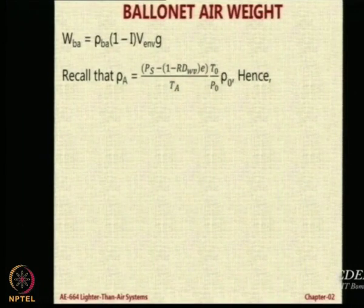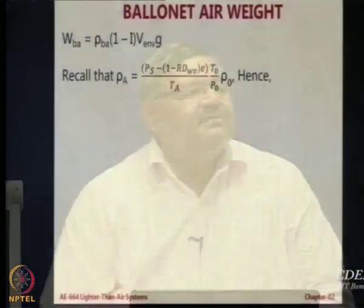Recall that the density of the ambient air rho_A can be expressed as the static pressure minus the component lost due to humidity — that is (1 - R_d W_v) times E — multiplied by T_0 rho_0 divided by P_0. Using the simple expression P = rho R T, you can work out that rho equals P divided by T. You can get the expression for R from that, and that is how we got T_0 rho_0 by P_0 using the standard gas equation.